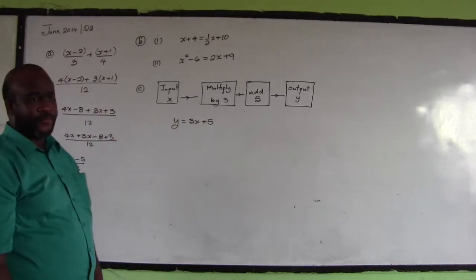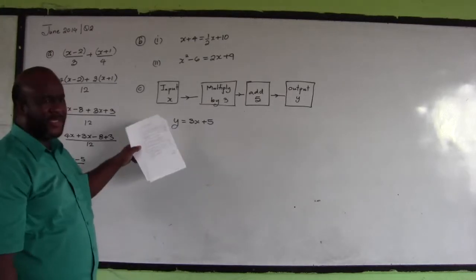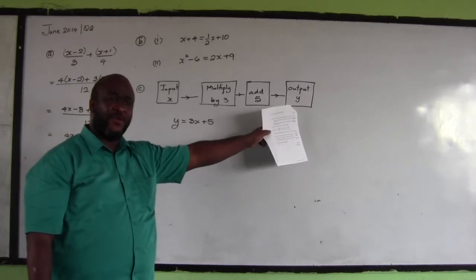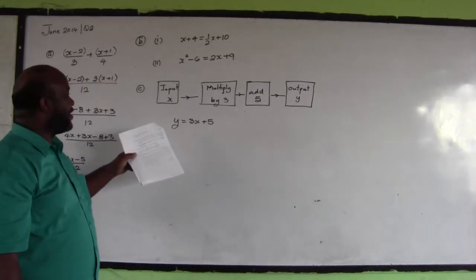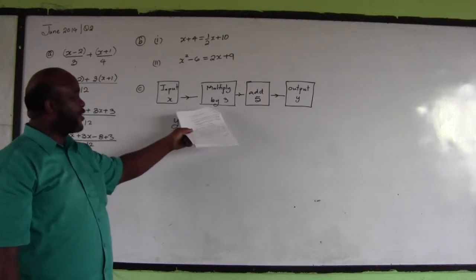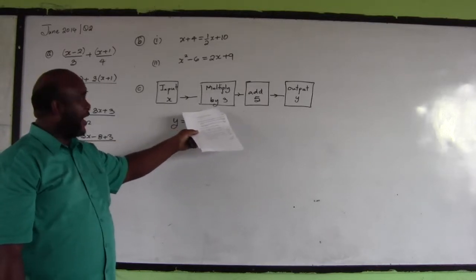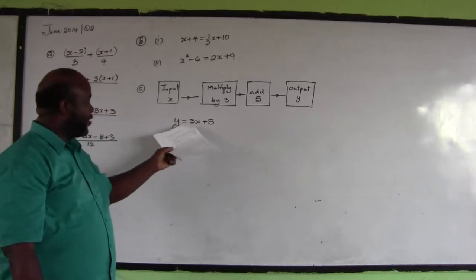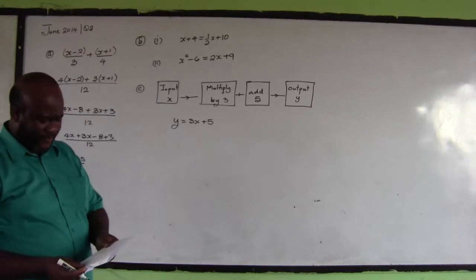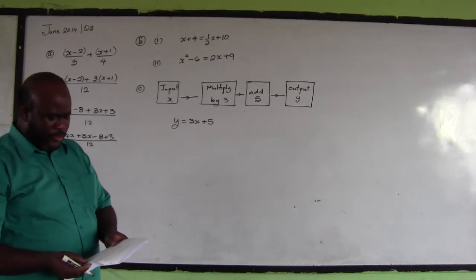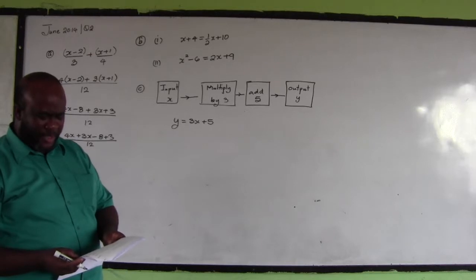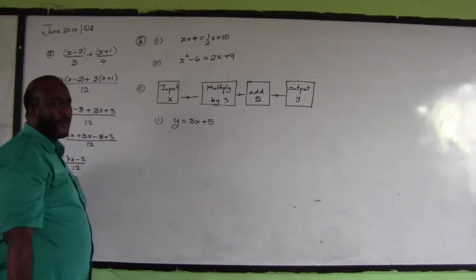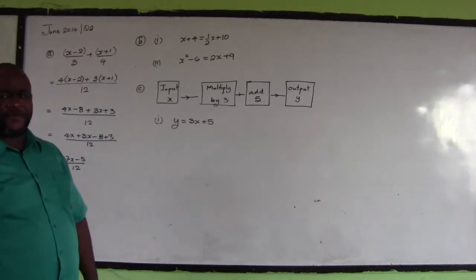Y is the output and x is the input. By going through this process, what you're calculating is y. Part C(i) asks: use information from the diagram to write a formula for y in terms of x. The answer is: y is equal to 3x plus 5.